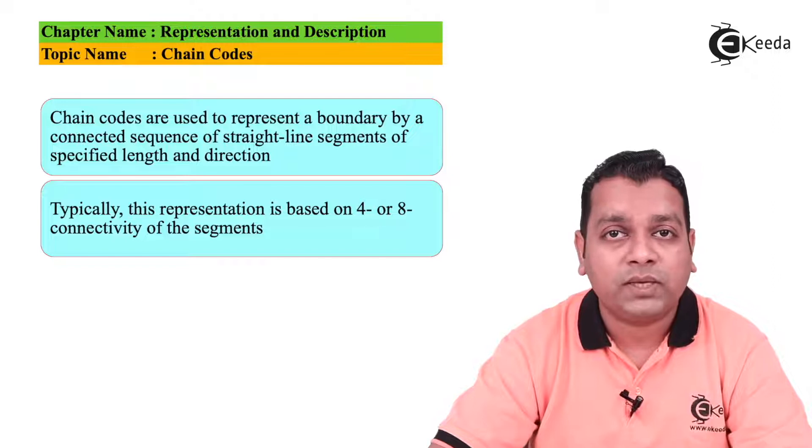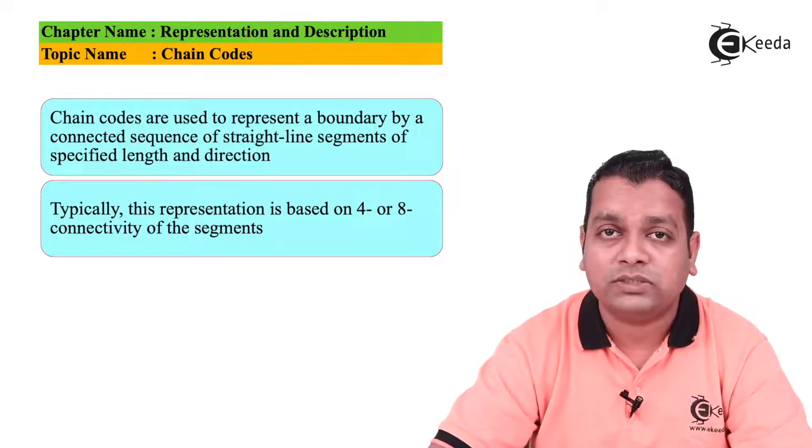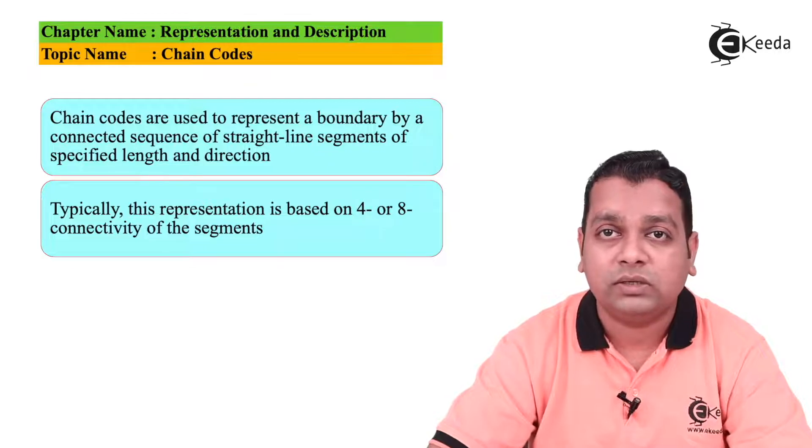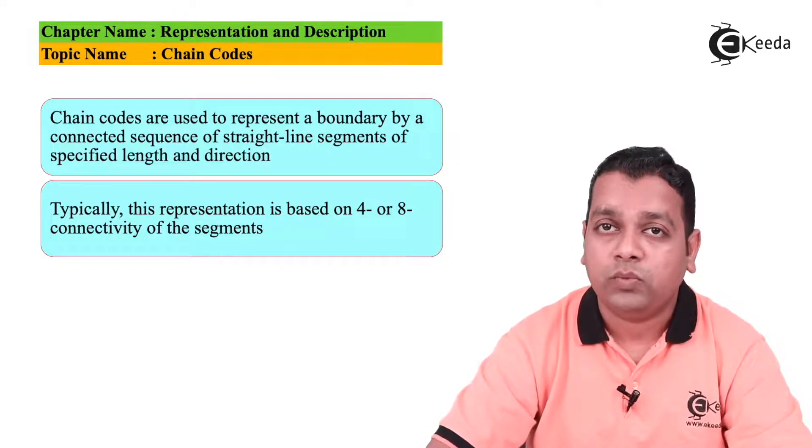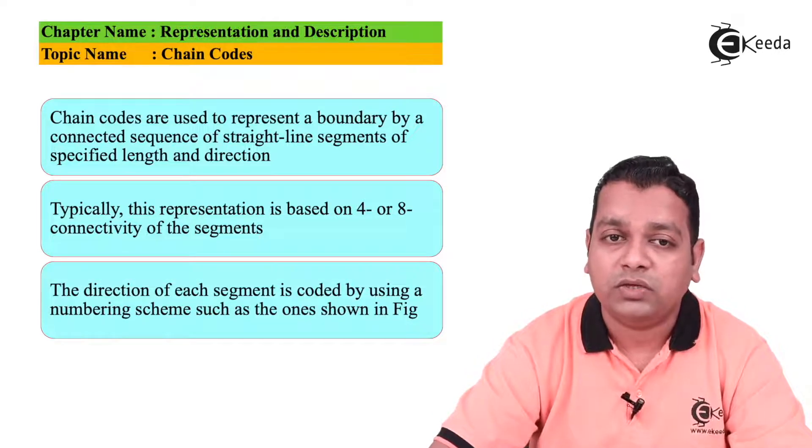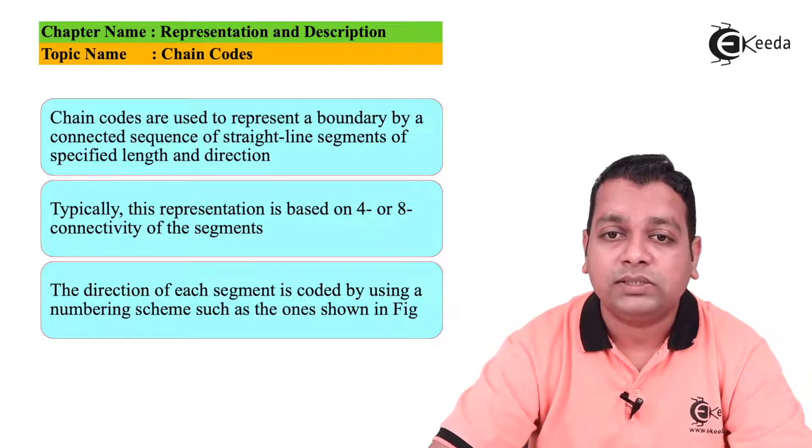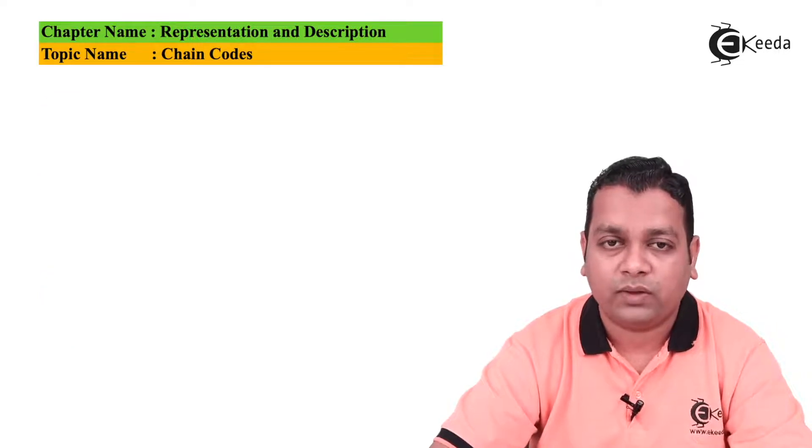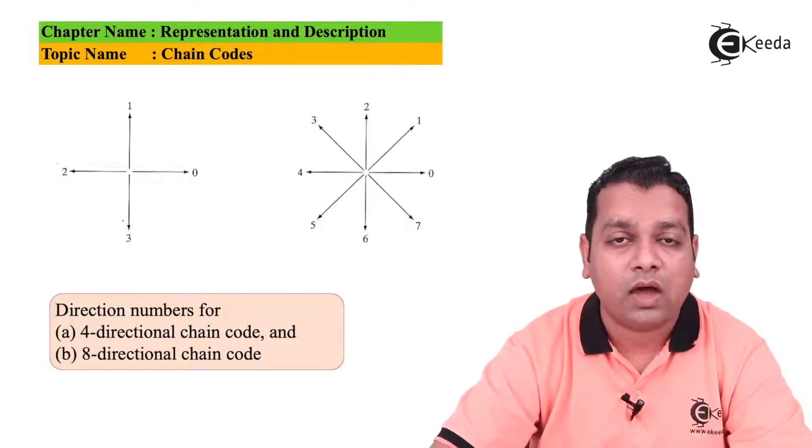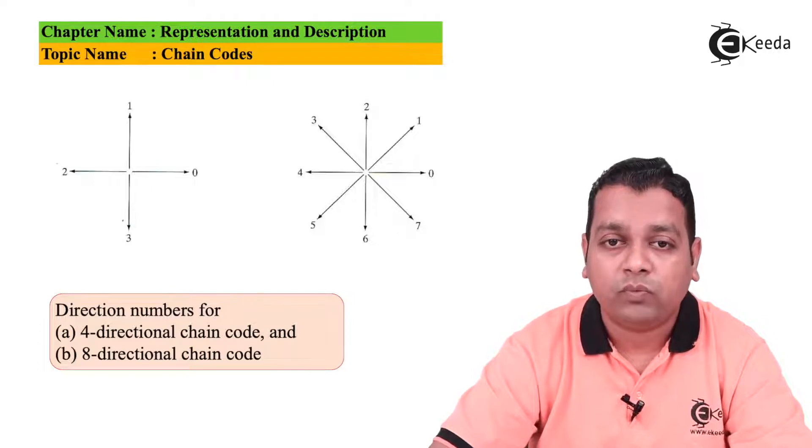The connectivity of a pixel with respect to its neighbors we have already covered while taking the second chapter of this subject, digital image fundamentals. The direction of each segment is coded by using a numbering scheme such as the ones we can show into the next figure. Here the direction numbers for the four connectivity as well as the eight connectivity we have.